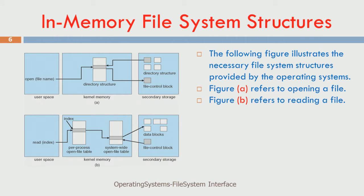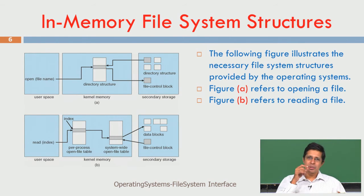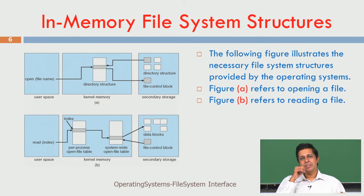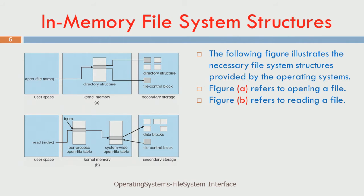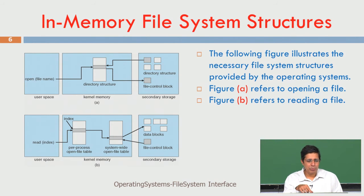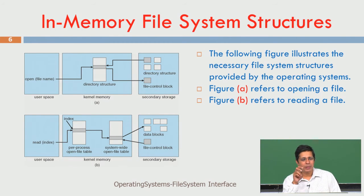There are in-memory file system structures. When I boot the system, something is brought from disk into memory, typically to enhance speed and also maintain certain security. What will be in memory? Whenever we open a file, for every file there is an entry created in a file table, which is an in-memory structure. The file table has details about all files currently opened - being accessed by at least one process executing in the system. For every process there is an in-memory per-process open file table, and then there is one system-wide file table.